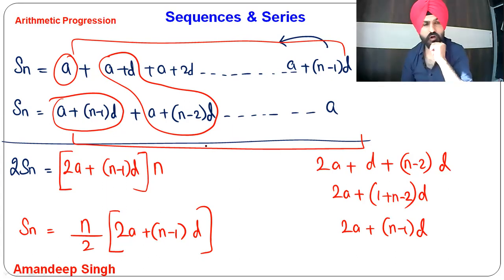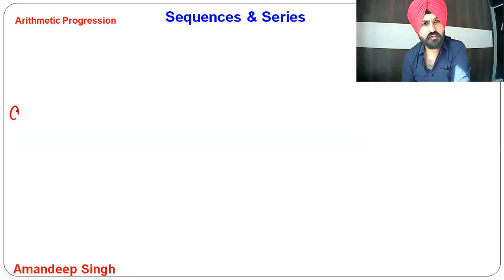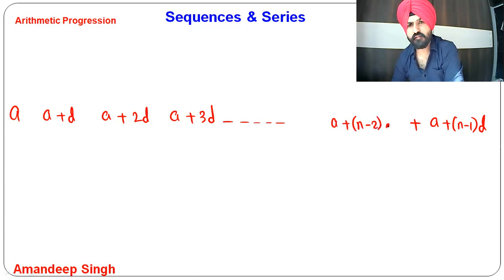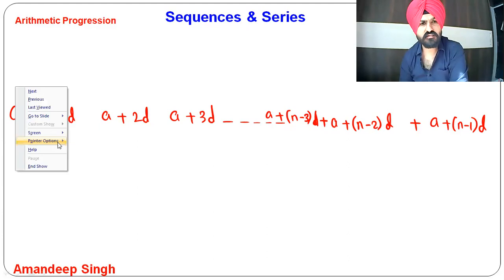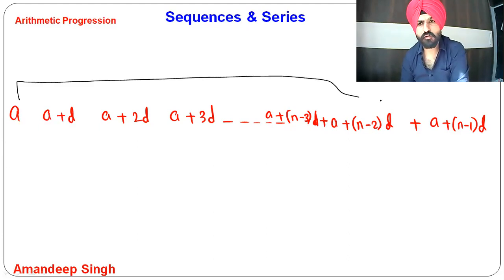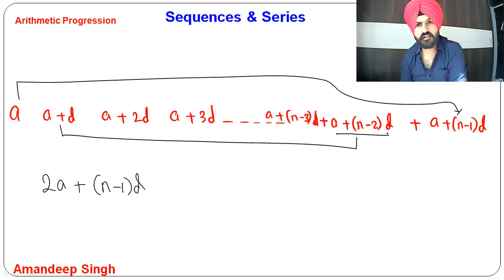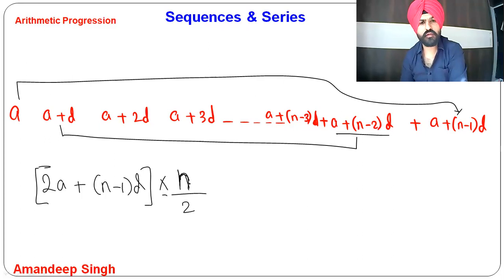We can also understand this another way. If you start pairing without doubling: A, then A plus D, then A plus 2D, then A plus 3D, and so on. The last term is A plus N minus 1 D, the one before is A plus N minus 2 D, and so on. If you add the first and last term you get 2A plus N minus 1 D. If you add the second and second last term, you also get the same sum. Total pairs are N by 2, so the same formula results.